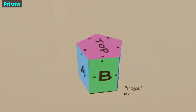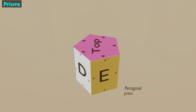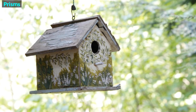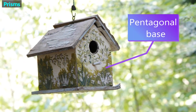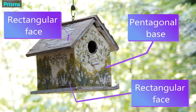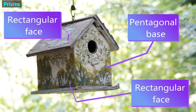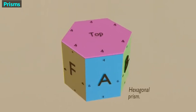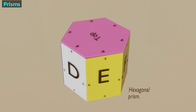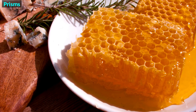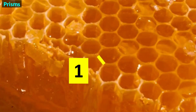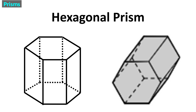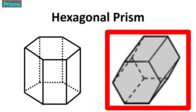This is a pentagonal prism — it gets that name because both of its bases are pentagons. The faces between the pentagons are rectangles. This birdhouse has a shape similar to a pentagonal prism. A pentagon is a shape that has five sides; the front wall is one pentagonal base and the back wall is another. This is how a pentagonal prism might look on a test. This is a hexagonal prism — both of its bases are hexagons, and the faces between them are rectangles. A hexagon has six sides. Honeycombs are hexagonal prisms. This is how a hexagonal prism might look on a test; the one on the right was used on an actual state exam.